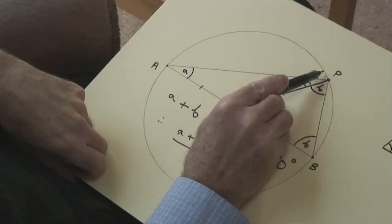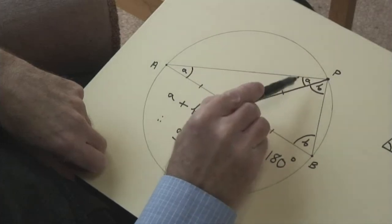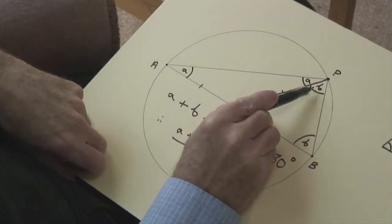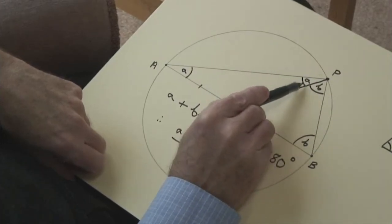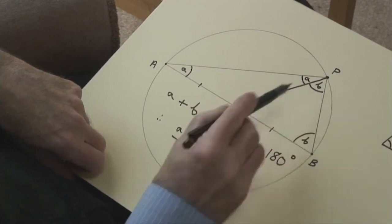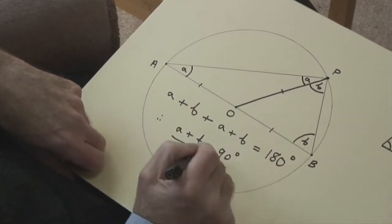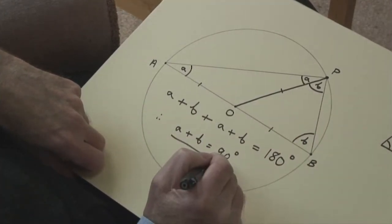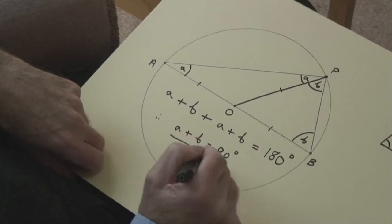It's true that if we move P around the circumference, both A and B will individually change. But the sum A plus B will not — I've just proved that that's always 90 degrees.